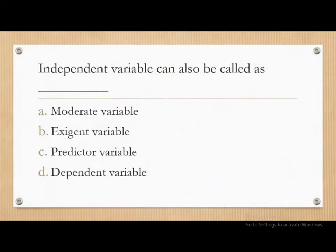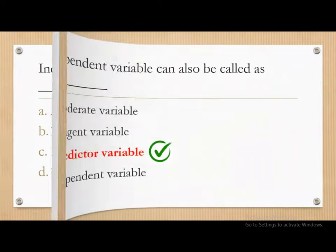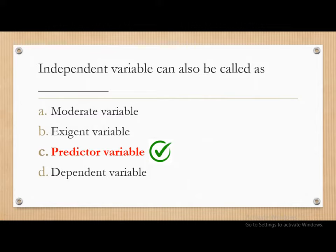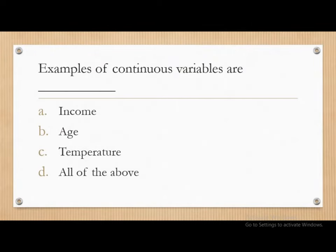Moving on. Independent variables can also be called as — the options are: moderate variable, exchange variable, predictor variable, and dependent variable. The correct answer is predictor variable. An independent variable can also be called a predictor variable.